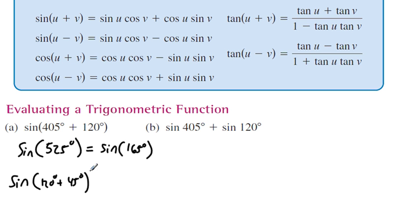By the way, this isn't the only pair. If you find another sum that gives 165, as long as both numbers are on the unit circle, you'll get the same answer. Now we apply the sum formula: sin(120°)cos(45°) + cos(120°)sin(45°).